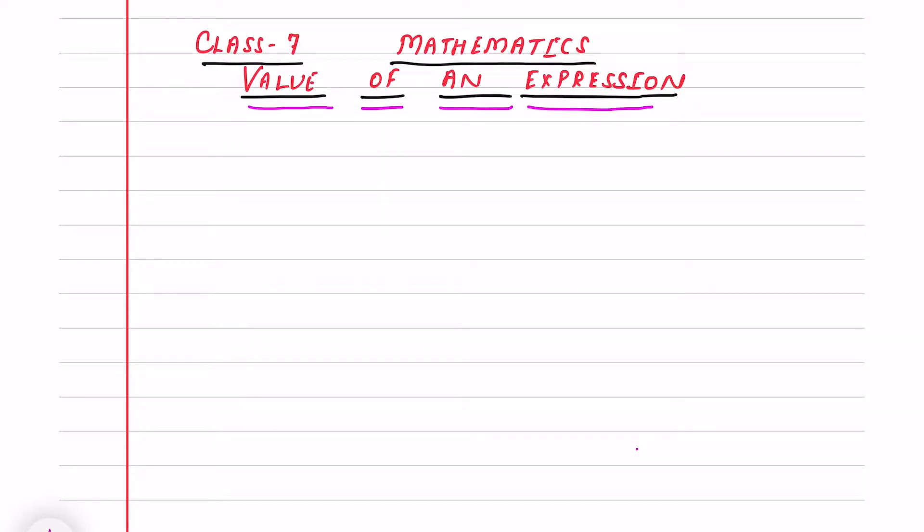You know in an algebraic expression we have literals or variables which can take any values. We can take 1, 2 or maybe negative also. So it depends on the variable. So how to find the values of this when we have variables in any expression like 3x plus 7 means x can take any value.